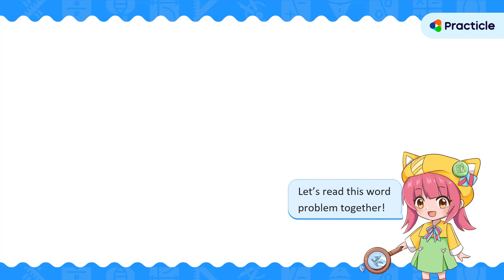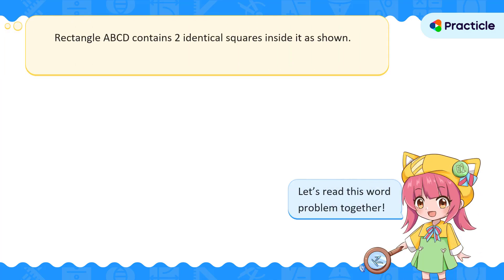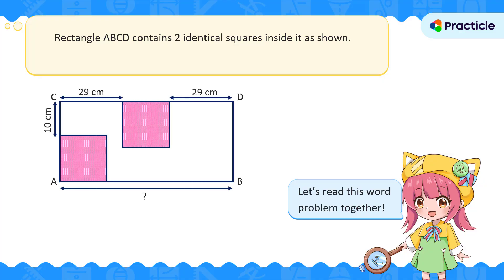Ready to see if you can solve this year's PSLE 2025 math question? We've got a rectangle ABCD, and there are two identical squares inside it as shown. We're given that the ratio of AB to BD is 5 to 2. Your mission is to find the length of AB.